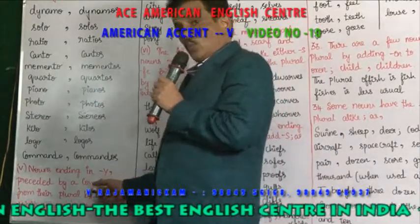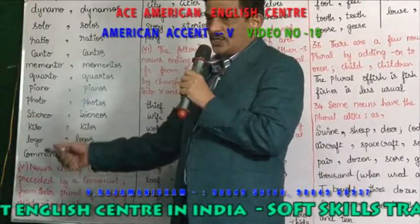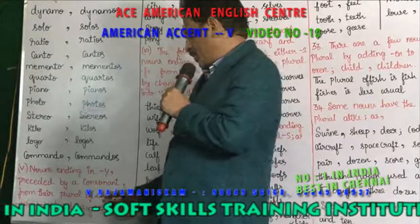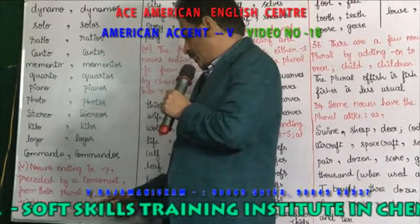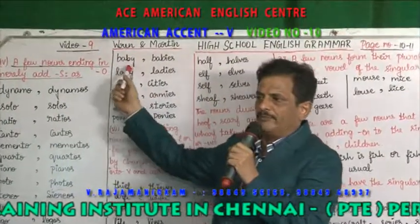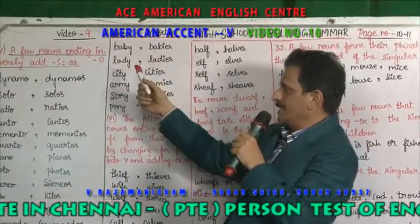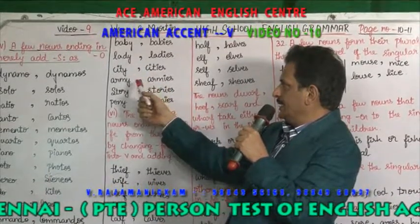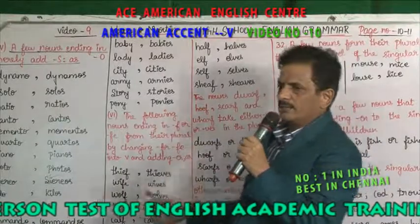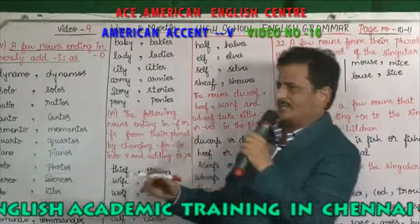Nouns ending in Y, preceded by a consonant, form their plural by changing Y into I and adding ES. For example: baby — before Y you have B, so in plural it becomes babies. That Y changes into I. Lady, city, army, story, pony becomes ponies. Pony means a low-rated horse.